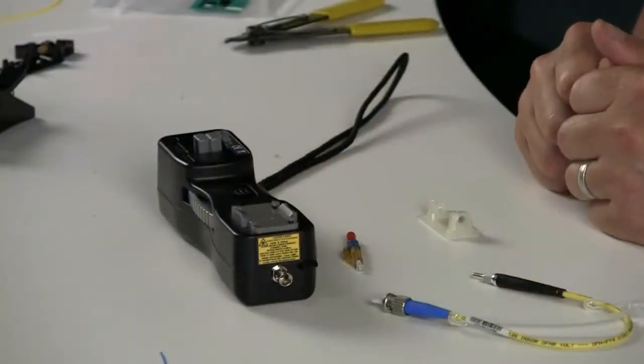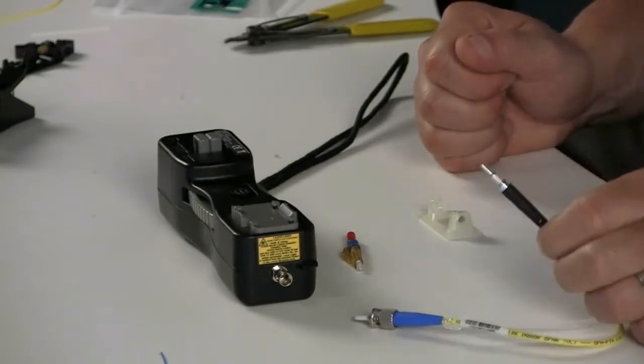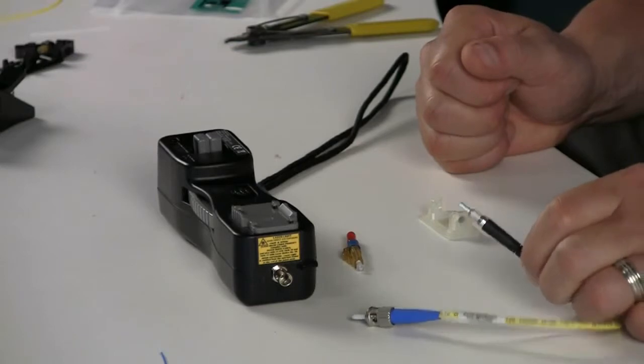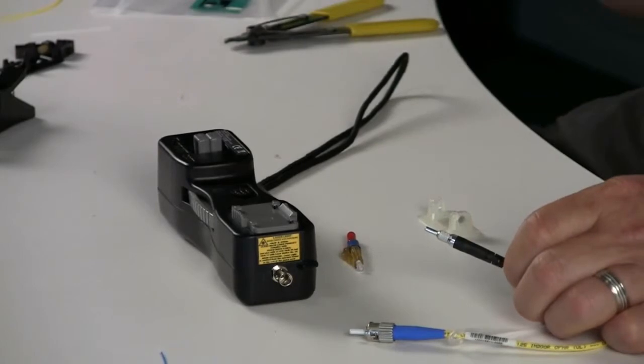To do an OptiCam termination, there are two patch cords associated with it. One is a 1.25 millimeter patch cord for LCs, and one has a 2.5 millimeter patch cord for ST and SC.